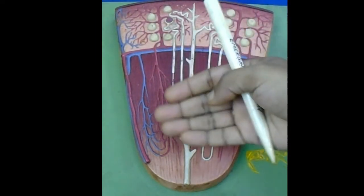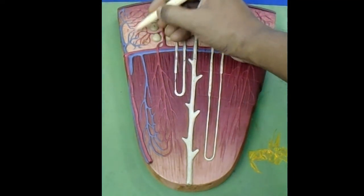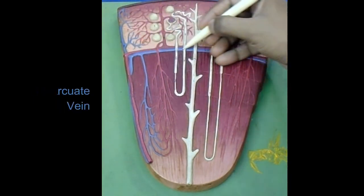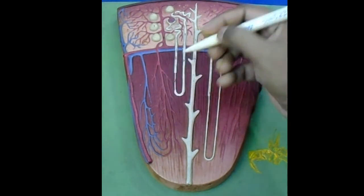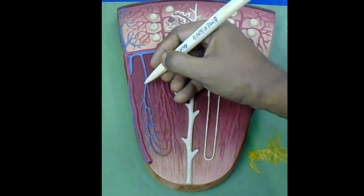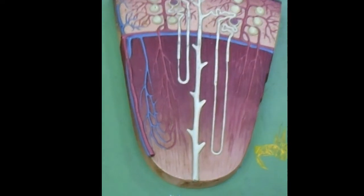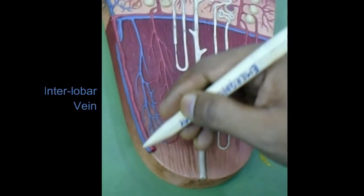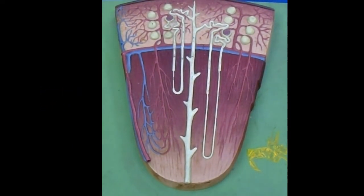Now we will discuss how arterial blood drains into the veins. Blood from the peritubular capillary plexus drains into the interlobular vein, which drains into the arcuate vein. Blood from the straight arteries around the loop of Henle drains through straight veins into the arcuate vein. The arcuate vein then drains into the interlobar vein, which forms the lobar vein, then drains into the segmental vein, and ultimately into the renal vein of the corresponding side.